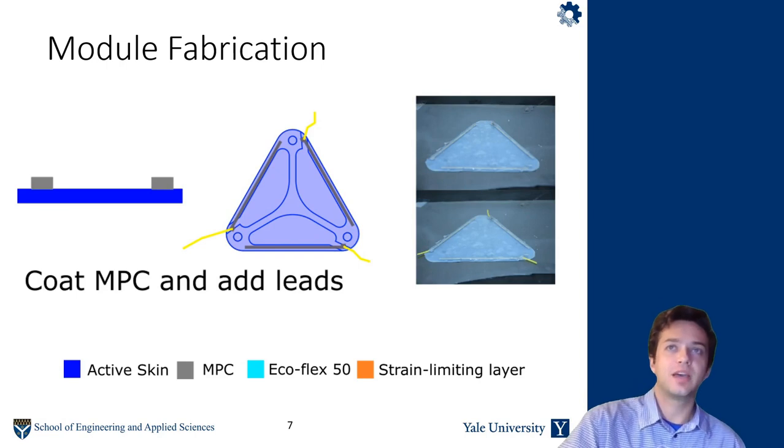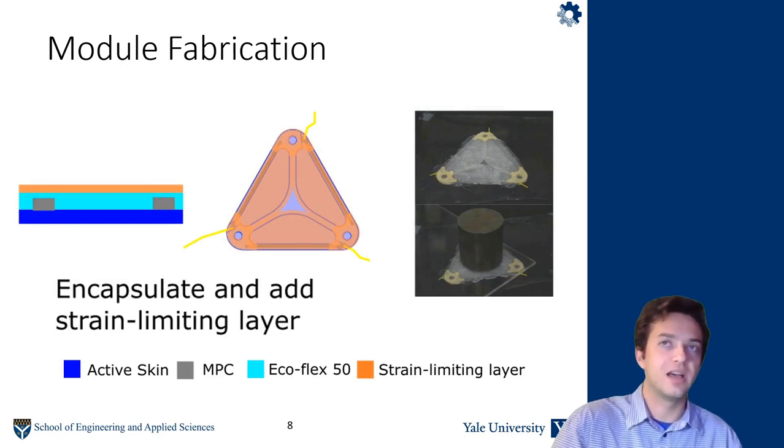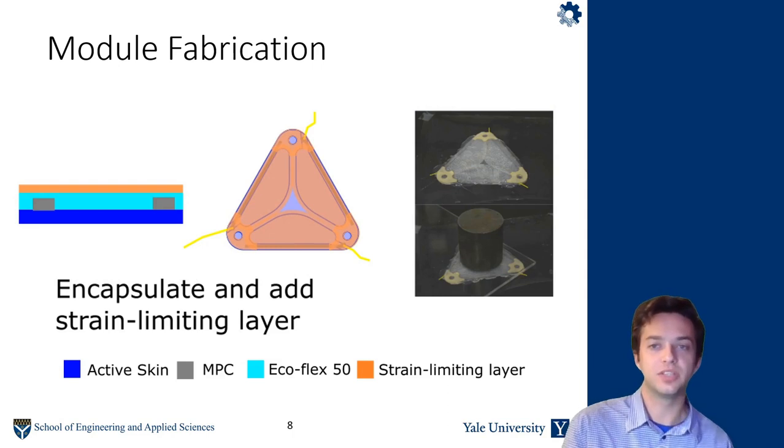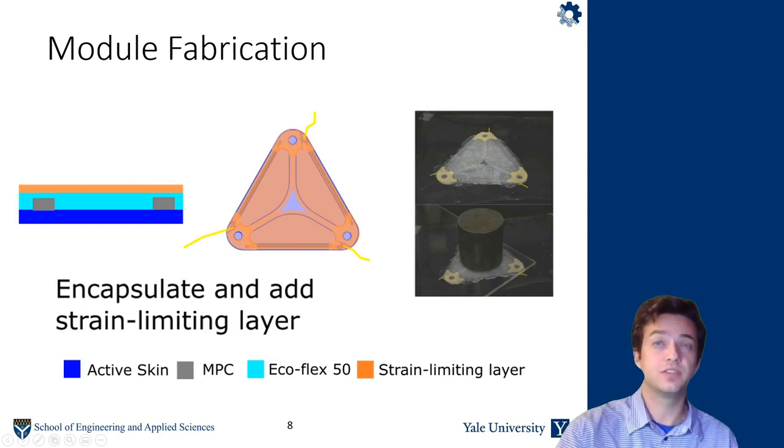After that sensing layer cures, the conductive composite, we encapsulate the whole thing with Ecoflex 50 silicon elastomer, and we add a strain limiting layer. The encapsulant doubles as an adhesive to attach the strain limiting layer. That layer consists of these fabric reinforcements that you see in the image. And then these patches that we adhere to it, the patches have unidirectional fibers.